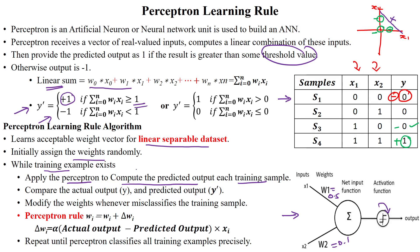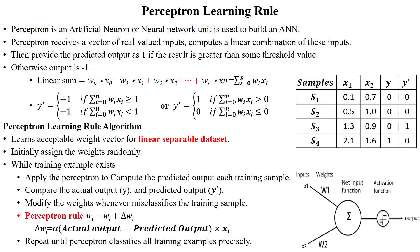Each sample is classified as positive or negative. We compare the actual output with the predicted output. For sample 1, the predicted output is 0 and actual output is 0 — both match, correctly classified. For sample 2, predicted output is 0 and actual output is 0 — again correctly classified. For sample 3, the actual output is 0 but the predicted output is 1 — it is misclassified.